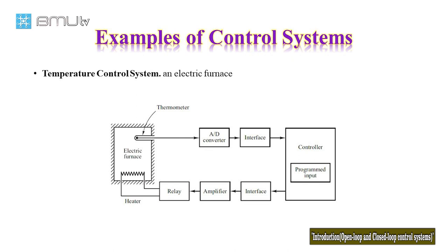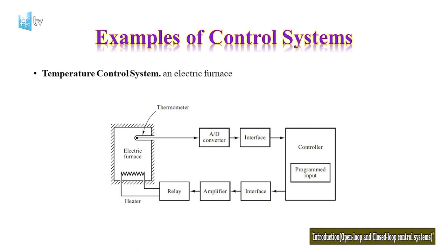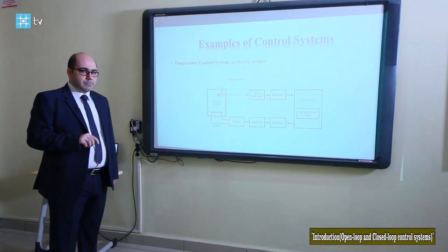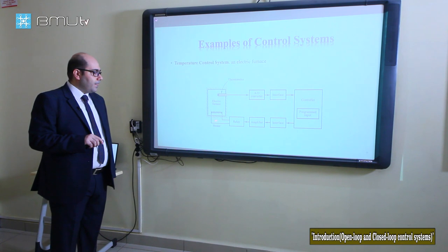The digital value is compared with the desired value programmed into the controller, and a suitable command is sent to the heater to control the temperature of the electric furnace. If the measured temperature is higher than the desired value, the controller sends a command to turn off the heater.